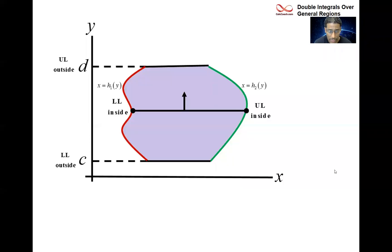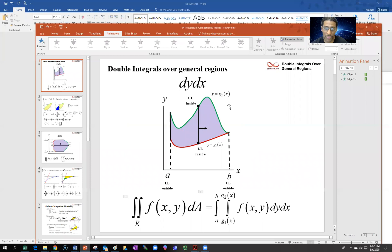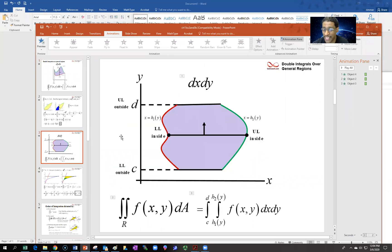Alrighty, now we're going to continue with multivariable integrals and look at option number two: when you have a general region and want to do it as dx dy instead of dy dx. In the previous video we saw dy dx and how it works, and now we want to look at dx dy and try to figure out how it works.